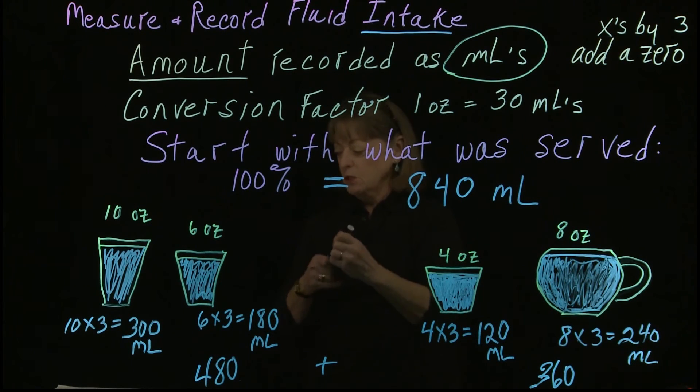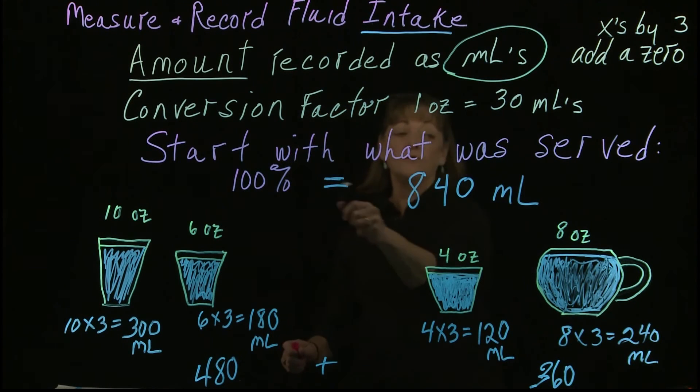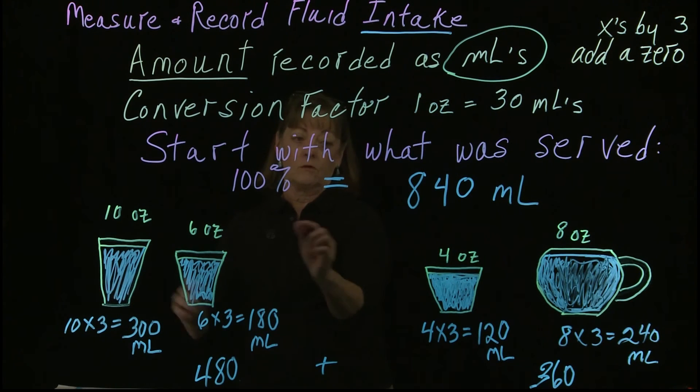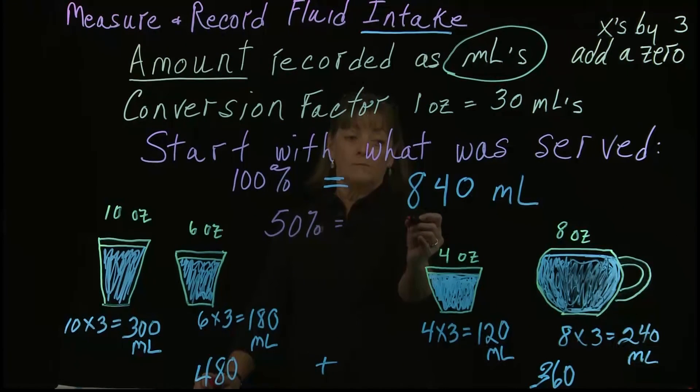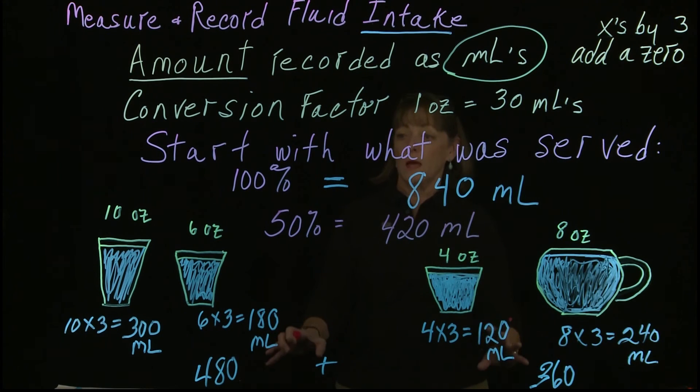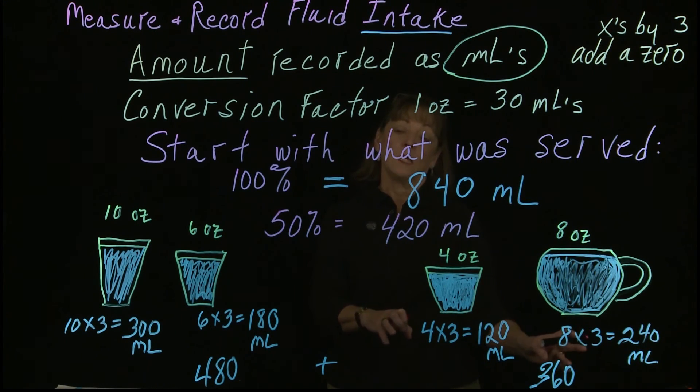So let's just do a benchmark figure here of what 50% would be if they drank half of this container. So if they drank half of their fluids, 50% is going to equal 420 mL. So those are our reference points for when we come back and look at what was left in the container and then we figure out what they got inside them.